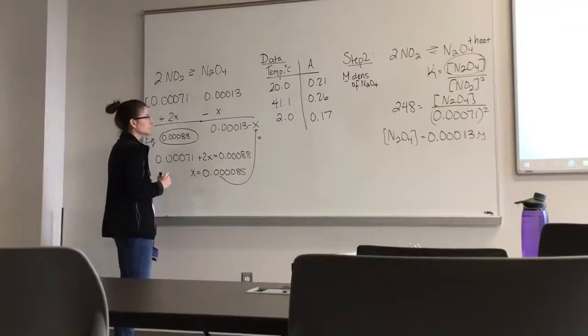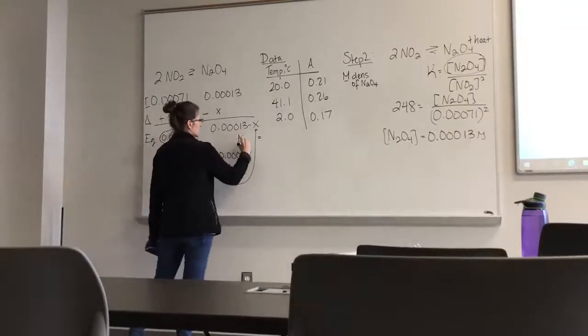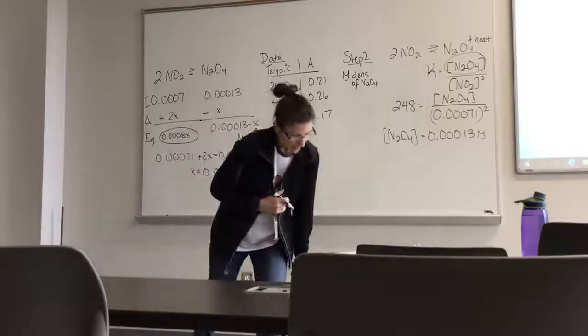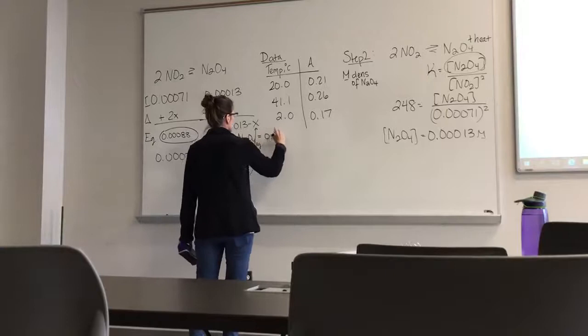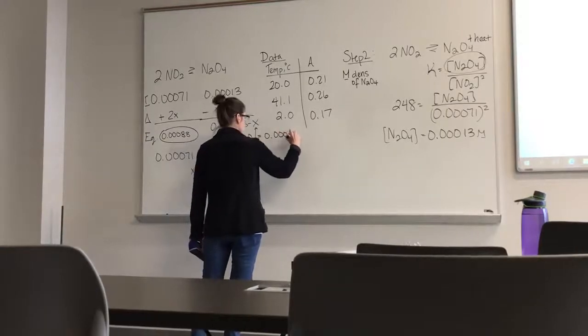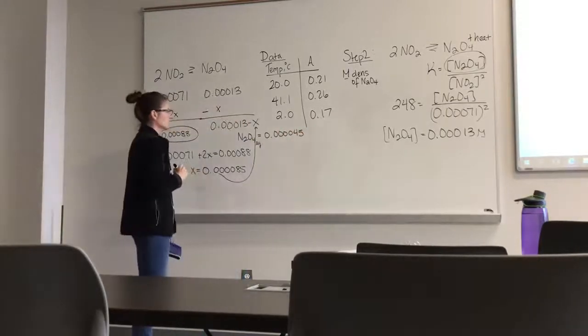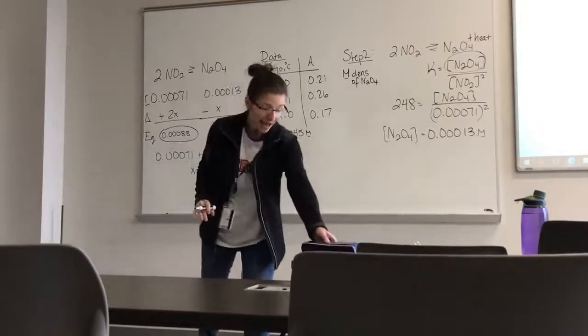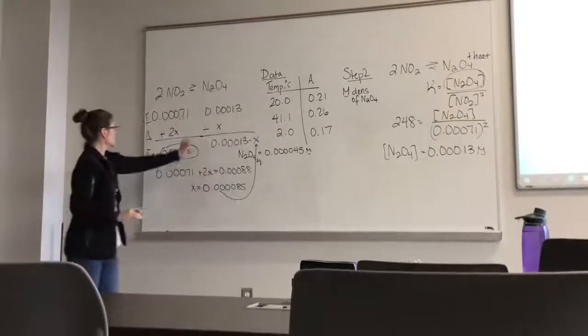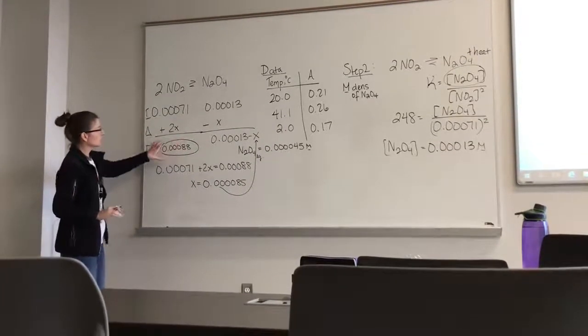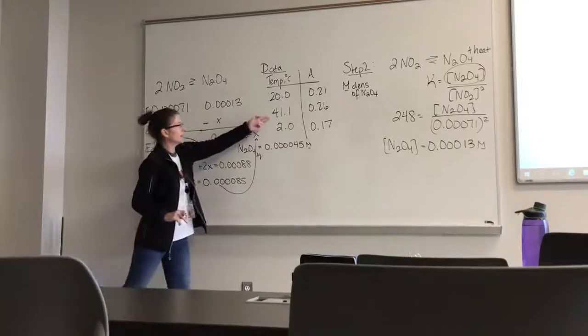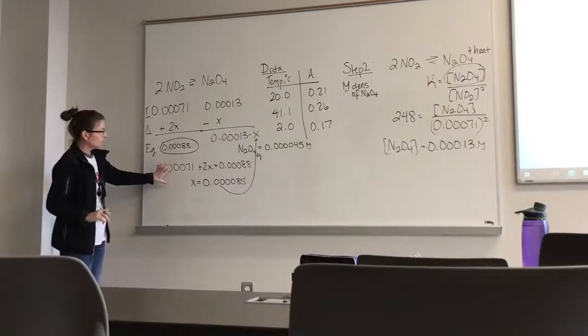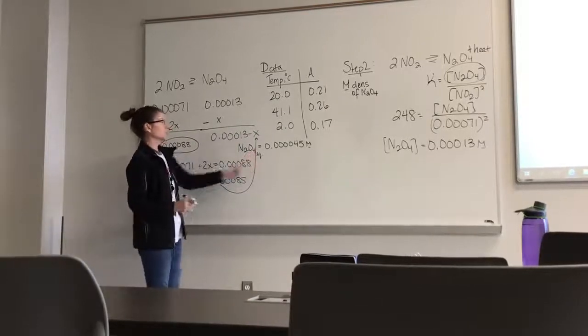I can then plug that x in, and that's going to give me my equilibrium concentration of N2O4. And when I do that, I end up with 0.000045 concentration units of my N2O4. So now, I've set up this table, found this equilibrium concentration NO2 from my data, and the fact that A is equal to εBC, and then I can find that change, plug it in to find the equilibrium pressure.